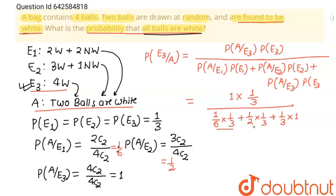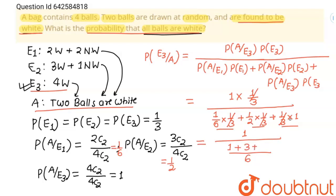Since each term in the denominator has a factor of 1/3, the 1/3 cancels. The denominator becomes 1/6 + 1/2 + 1. Converting to sixths: 1 + 3 + 6 = 10/6. So the result is 1 divided by 10/6, which gives 6/10, simplifying to 3/5. This is our final answer. Thank you, students.